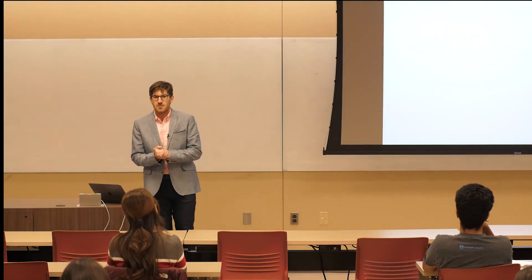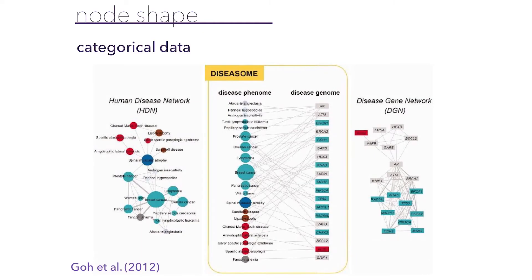Another interesting node property is node shape, though this can get very busy quickly. Node shape is effective when representing only a few values and is typically used for categorical data — no clear ordering, just distinguishing between particular values. The story I'll tell with node shape is about the disease zone: one type of node represents human diseases, another type represents genes that have been mutated and directly associated with that disease.